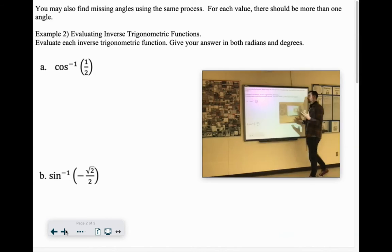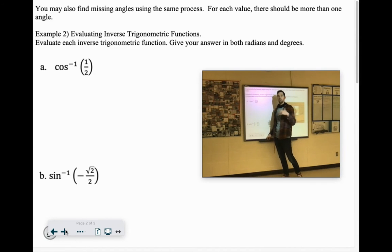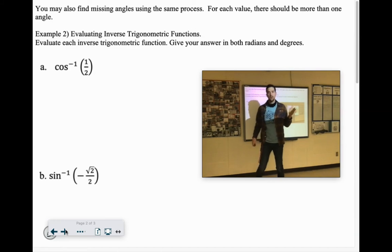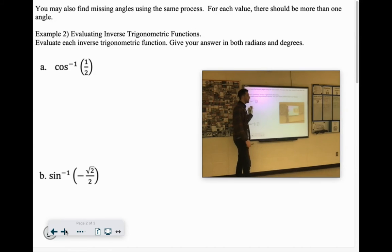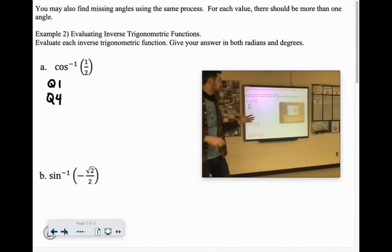Cosine inverse, cosine is 1 half. So think, when is cosine positive? You can look at that chart, but cosine is our x. When are the x's positive? That's in quadrant 1 and quadrant 4.